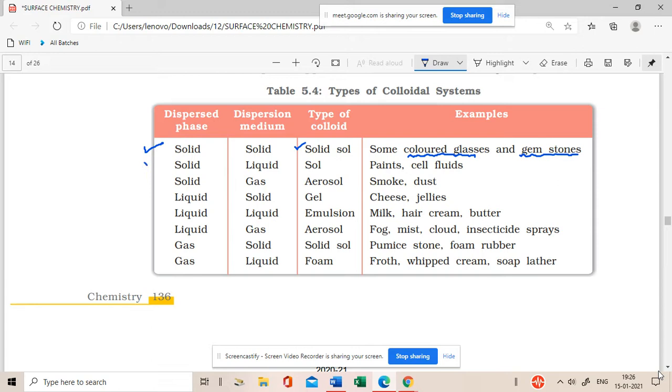When a solid is dispersed in a liquid, then it is just known as a sol. For example, paint. In paint, solid particles are dispersed in the liquid, the fluid of the cell.